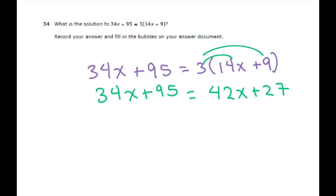Now I'm going to move my x's on the right hand side. So I'm going to subtract 34x from both sides. Get the x's on the right hand. And I'm going to subtract 27 from both sides.